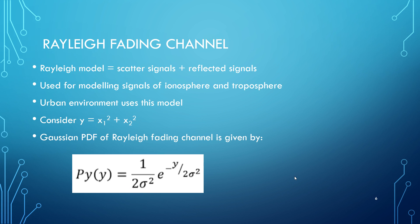Rayleigh fading channel: The Rayleigh fading model can be assumed to comprise the sum of all scattered signals received at the receiver from many paths and reflected signals. It is used for modeling signals in the ionosphere and troposphere, and in urban environments for modeling radio signals. Consider the equation y = x1² + x2², where x1 and x2 are independent Gaussian random variables with mean zero and variance for in-phase and quadrature components. The Gaussian probability distribution function for the Rayleigh fading channel is given as shown, where y is a chi-squared distribution having two degrees of freedom.